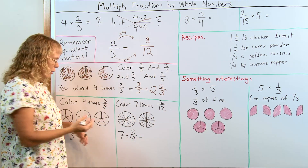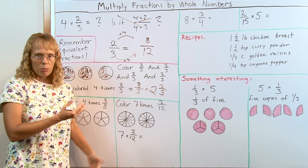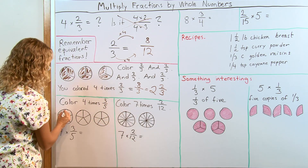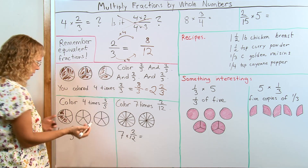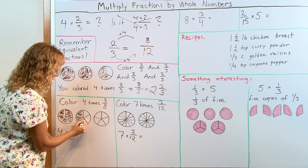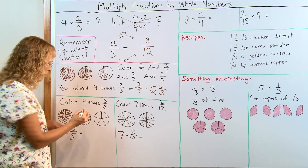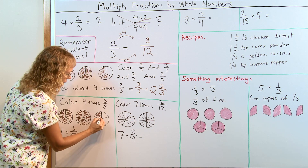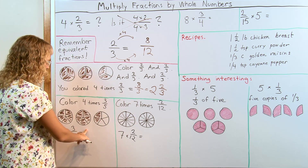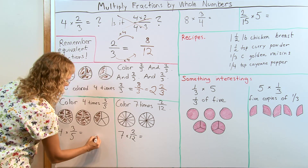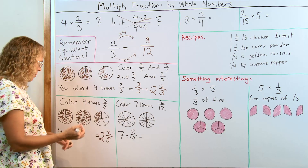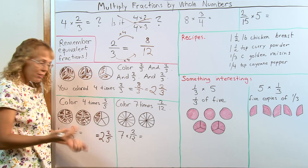You can let students do similar exercises with a visual model. Color 4 times 3 fifths: I colored 3 fifths, then the second batch of 3 fifths, the third batch, and my last batch of 3 fifths. What did I get? I get 2 and 2 fifths. At the same time, I colored 12 fifths.